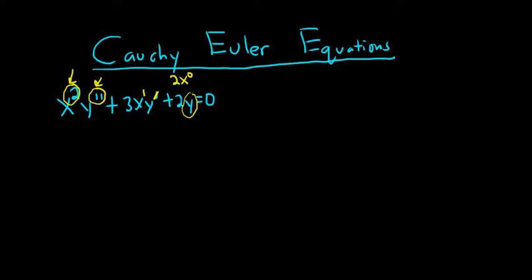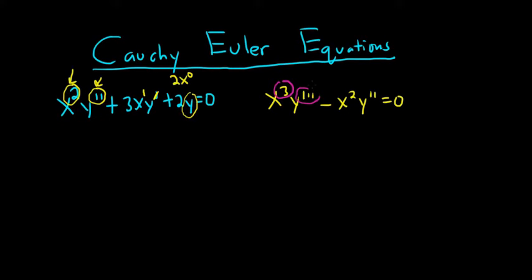and you can think of y as being the 0th derivative. That's what it means to be a Cauchy-Euler differential equation. Here's another example: x cubed y triple prime minus x squared y double prime equals 0. This is also a Cauchy-Euler differential equation. Here the power of x is 3 and the order of the derivative is 3; here the power of x is 2 and the order of the derivative is 2.